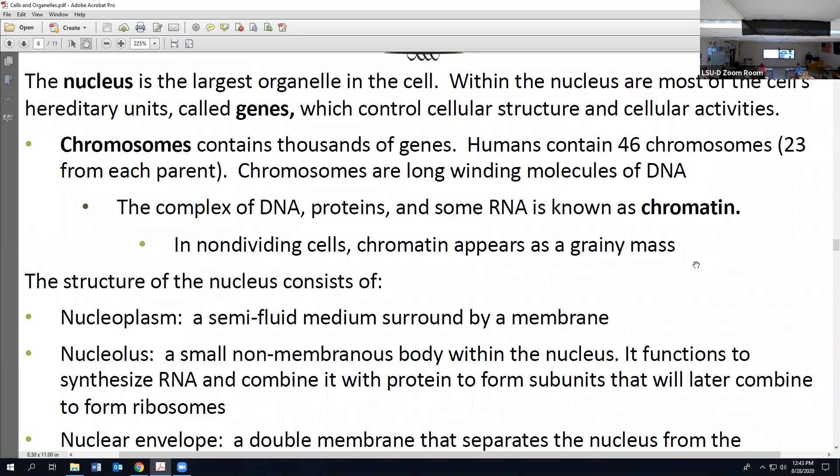We can say that the nucleus is responsible for controlling cellular structure and cellular activities. We have within our nucleus chromosomes, which each contain thousands of our genes. A typical human cell will contain 46 chromosomes because the sperm that came from dad contained 23, the egg that came from mom contained 23, and 23 plus 23 is 46. Chromosomes are described as a long winding molecule of DNA.